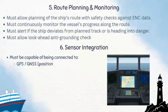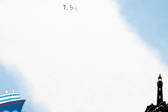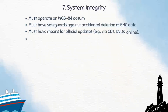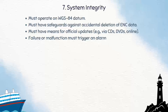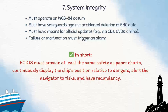Sixth is sensor integration: it must be connected to GPS, GNSS, gyro, speed log, and optionally radar AIS overlay. Seventh is system integrity: it must work on WGS84 datum, safeguard against accidental data deletion, allow official updates, and give alarms for system failure. In short, EGDIS must provide the same level of safety as paper charts, continuously display the ship's position relative to dangers, give alarms when risks are detected, and always have redundancy.